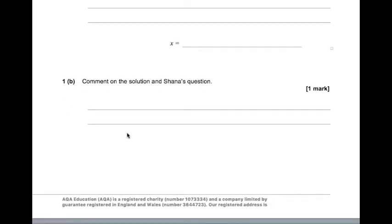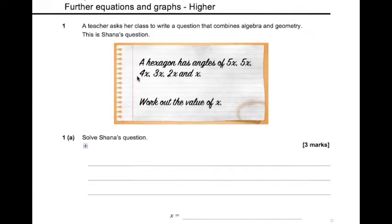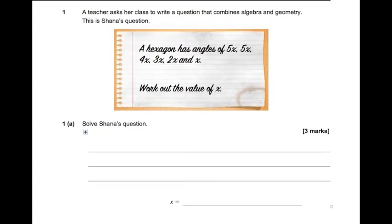Right, so part B, comment on the solution and Shanna's question. So I think this is a really strange question for them to ask you. If we think about what's going on, well, this is a hexagon and it's got these different angles where x is 36. So let's think about what these angles would be. So 5 times 36 is 180. This is 180. 4 times 36 is 144. 3 times 36 is 108, 72 and 36.